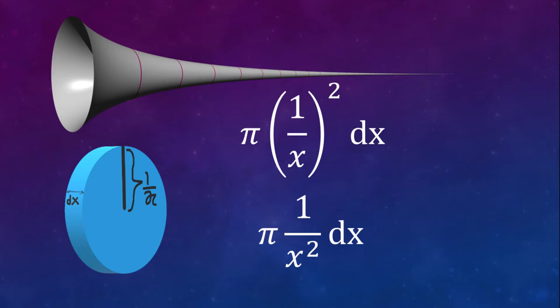In our case, the radius is simply the function which is 1 over x, and the thickness is a small change in x, which we'll call dx. The volume of the thin disk is equal to π times (1 over x) all squared, which is the same as 1 over x squared, times the thickness which is dx.